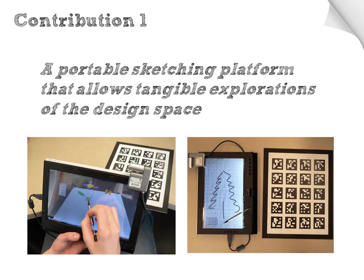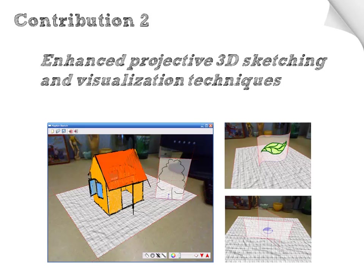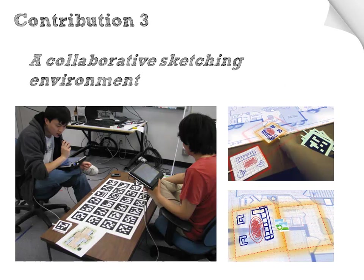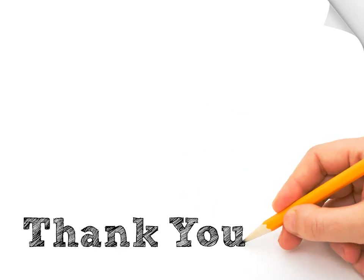To recap, here are the three main contributions of this work. First, I presented a portable sketching platform that makes use of physical media to enable tangible and fluid explorations of 3D sketches. Second, I introduced several features that enhance the projective 3D sketching experience and help to reduce the complexities of 3D sketching while maintaining essential qualities of traditional 2D sketching, such as the support of ambiguity. And finally, I outlined a collaborative sketching environment which makes use of the aforementioned sketching platform and techniques to support the social activities of sketching. Thank you for your attention.